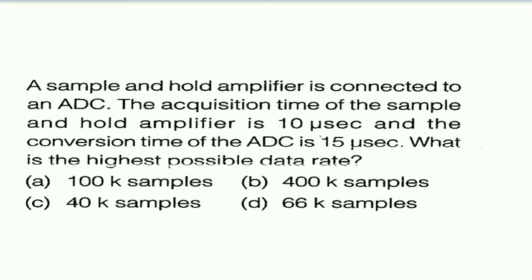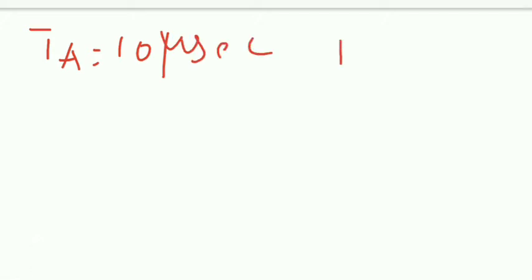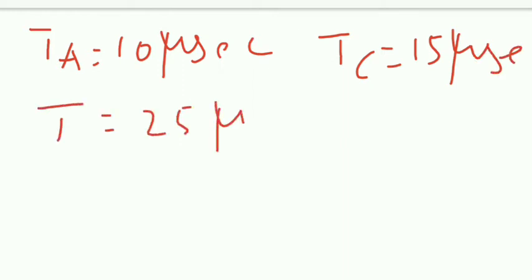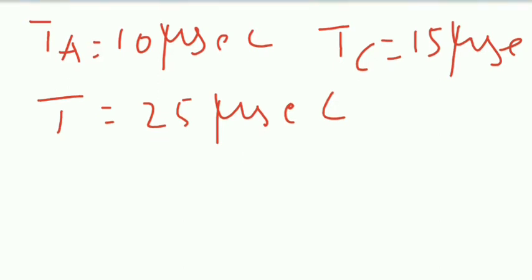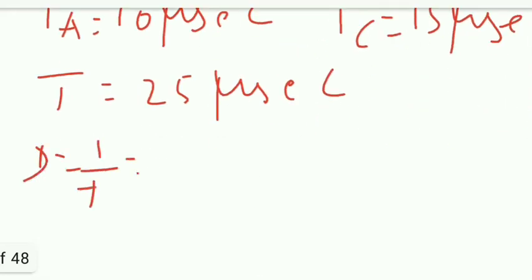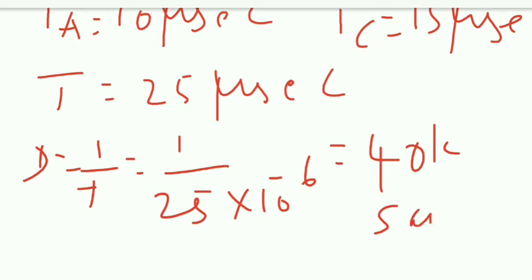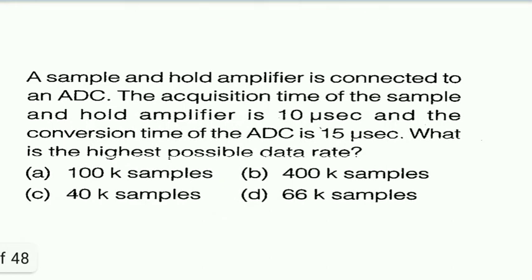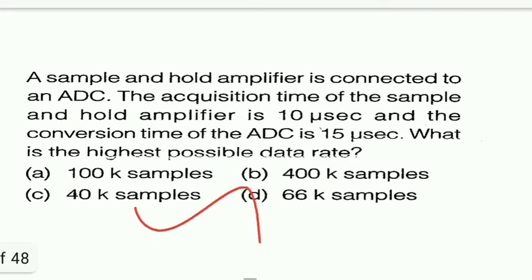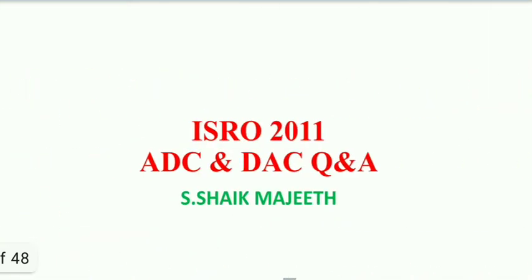They have given acquisition time ta = 10 microseconds, conversion time = 15 microseconds. So total time period is 25 microseconds. The data rate is equal to 1/T, so 1 divided by 25 × 10⁻⁶, which equals 40 kilo-samples per second. So option C is the right answer.